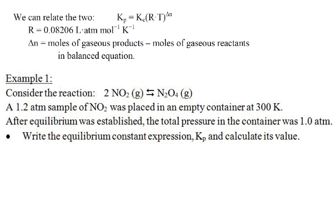Now let's see how that actually works. So here's our little expression up here just for notes. So example, if we had a reaction like 2 NO2 turns into N2O4, then here's our clue. It says a 1.2 atmosphere sample of NO2 is placed into an empty container at 300 Kelvin.